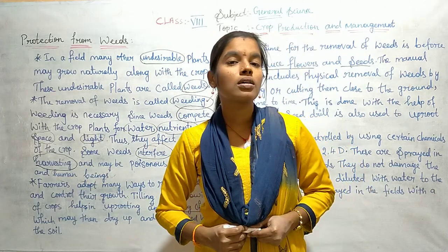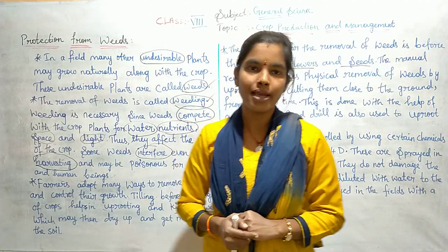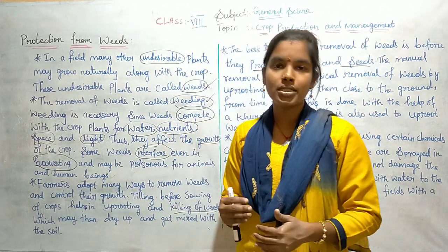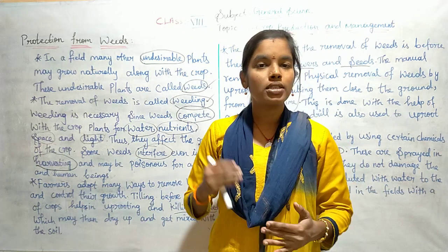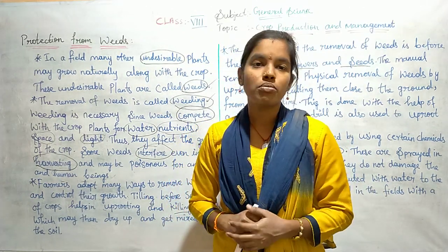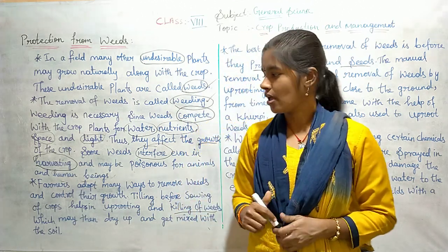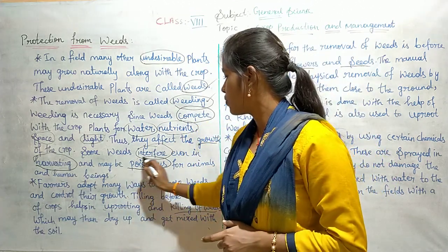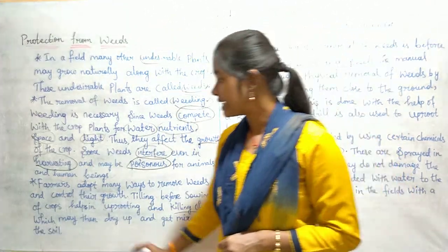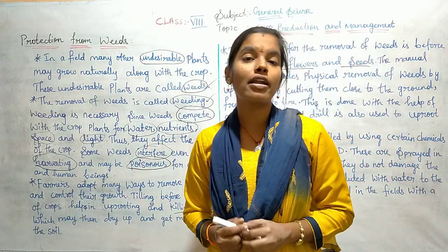Some weeds also interfere in harvesting. Harvesting is the cutting of crops after maturity. If weeds interfere in harvesting, they mix with the grains. If animals or human beings consume those grains, they will get problems because some weeds are poisonous for animals and human beings.